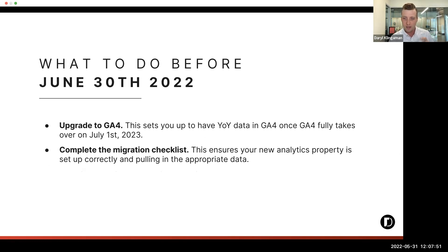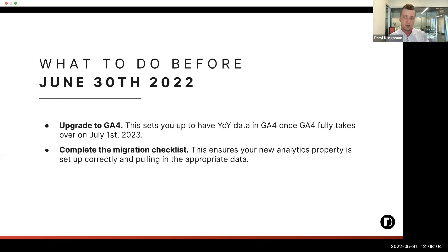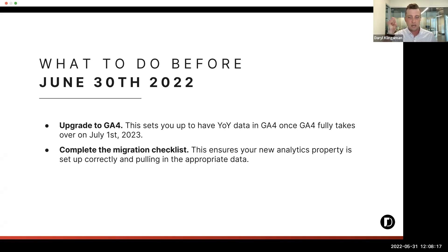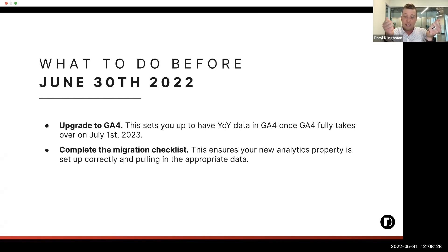I'm going to spend another couple minutes on this, stressing this and probably beating a dead horse. But because Google is sunsetting Universal Analytics next July, if you don't have Google Analytics 4 set up by the start of July this year, you will lose the ability to compare year-over-year data in platform. You'll have one year's data inside of Universal Analytics and the next year's data inside of GA4, and at some point that data inside of Universal Analytics will even become inaccessible.